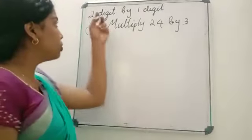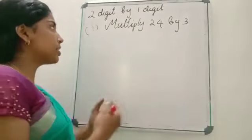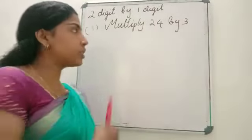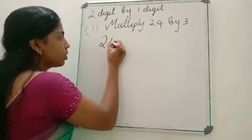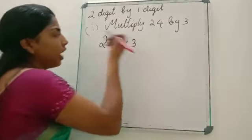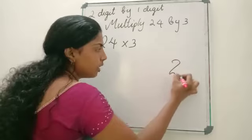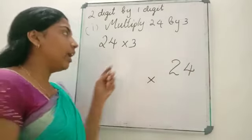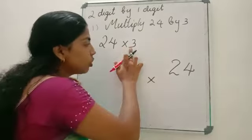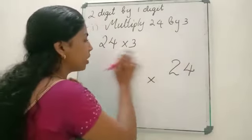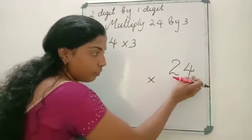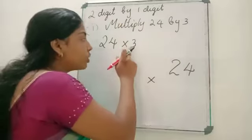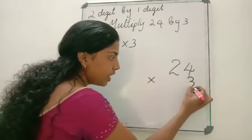Next we are going to study multiplication of 2-digit numbers by a 1-digit number. Let us see how we can multiply a 2-digit number by a 1-digit number. The question is: multiply 24 by 3, that means 24 into 3. First we have to rewrite the question. Write 24, then 3. Be careful — this 3 should be written in the 1's place itself, just below the 4. In 24, the 4 is in the 1's place and 2 is in the 10's place.